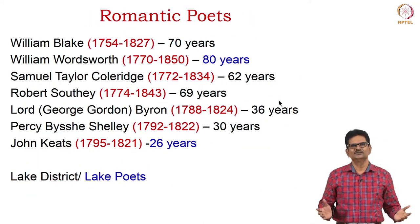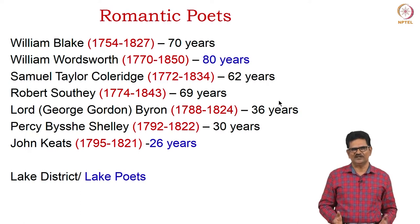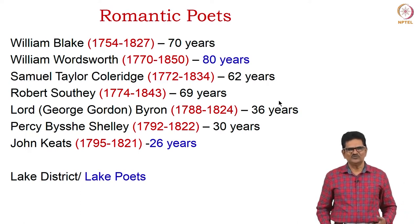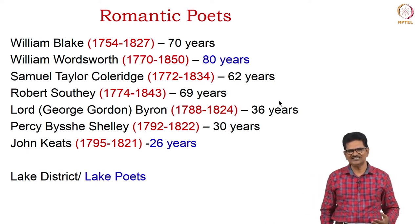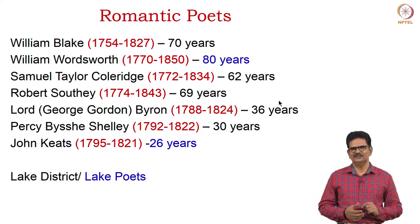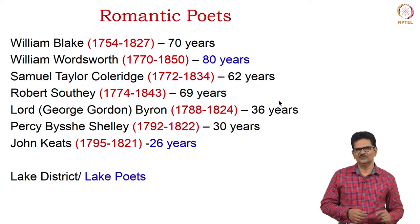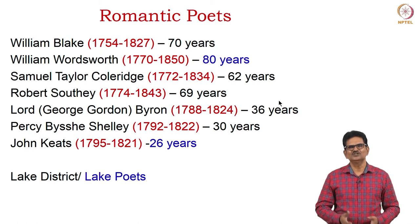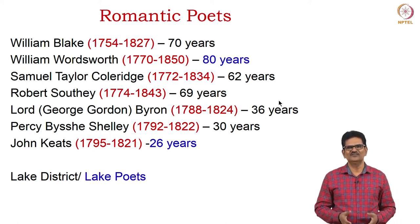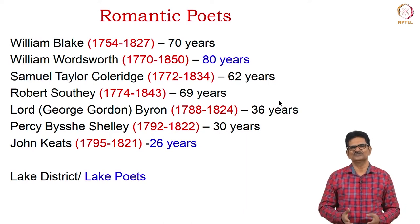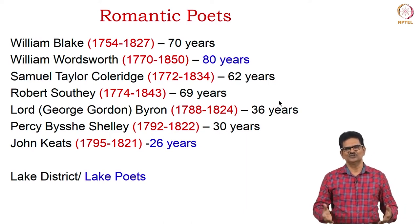Here we have the list of Romantic poets: William Blake, William Wordsworth, Samuel Taylor Coleridge, Robert Southey, Lord Byron, Percy Bysshe Shelley, and John Keats. The first three — Wordsworth, Coleridge, and Southey — were called Lake poets. Wordsworth lived the longest, and John Keats lived for the shortest period, but all of them produced great poetry which we cherish today.